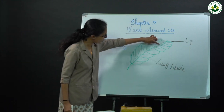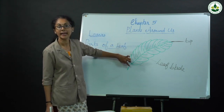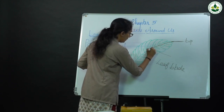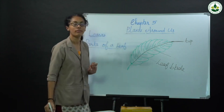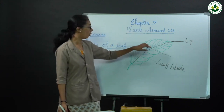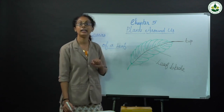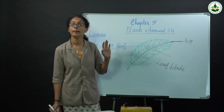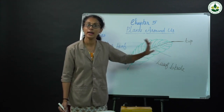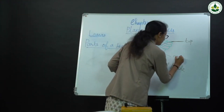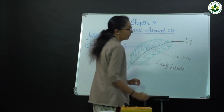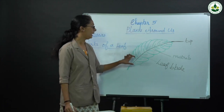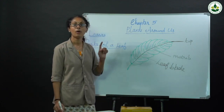A thin tube in the middle of a leaf — this thin tube in the middle of a leaf is known as the mid rib or main vein.